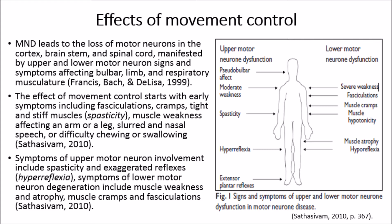Symptoms of upper motor neuron involvement include spasticity and exaggerated reflexes including hyperreflexia. Symptoms of lower motor neuron degeneration include muscle weakness, atrophy, muscle cramps and fasciculations. The picture to the right shows the signs and symptoms of upper and lower motor neuron dysfunction, with upper motor neuron dysfunction showing pseudobulbar effects, moderate weakness, spasticity, hyperreflexia and extensor plantar reflexes, and lower motor neuron dysfunction showing severe weakness, fasciculations, muscle cramps, muscle hypotonicity, muscle atrophy and hyporeflexia.